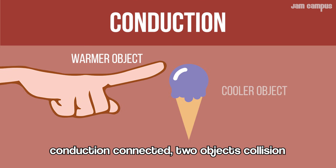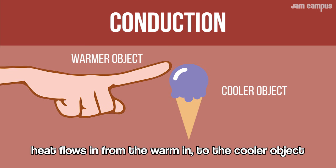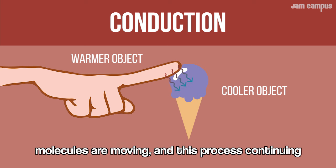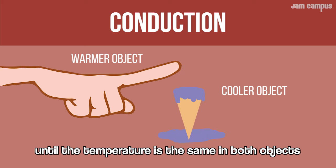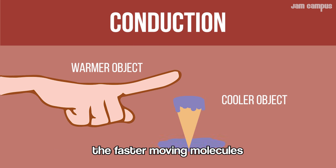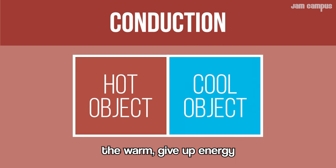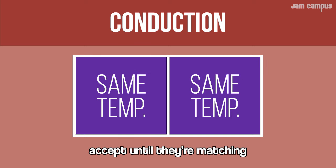Heat energy is formed through conduction, connected by collision. Heat flows into the warming, to the cooler object. Molecules are moving; this process continues until the temperature is the same in both objects. They're still moving molecules.